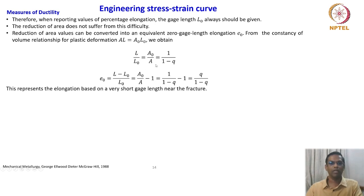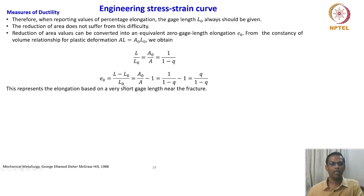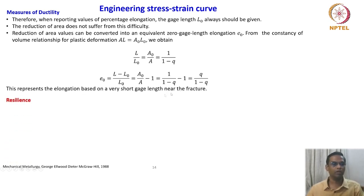From the constancy of volume relationship, L divided by L_naught equals A_naught divided by A, which equals 1 divided by (1 minus Q). The engineering strain can then be written as (L minus L_naught) divided by L_naught, which equals A_naught divided by A minus 1, giving 1/(1-Q) minus 1. This represents the elongation based on a very short gauge length near the fracture — this is important to remember.